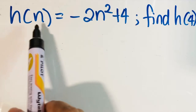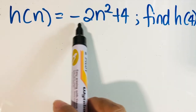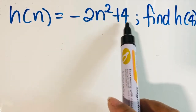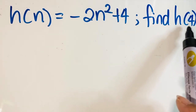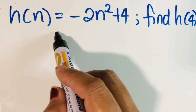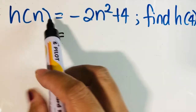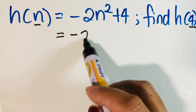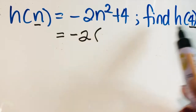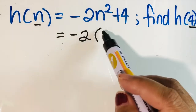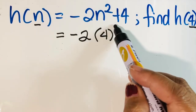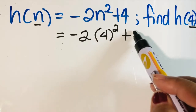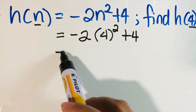Next, h of n equals negative 2n squared plus 4. Find h of 4, so let us substitute. The value of n is 4, so this is negative 2 times parentheses 4, raised to the power of 2, plus 4.